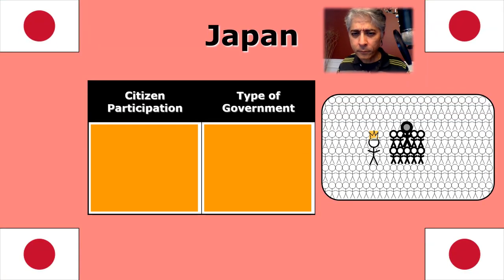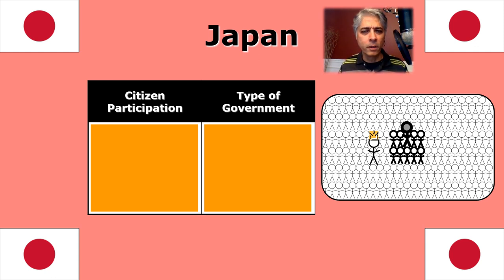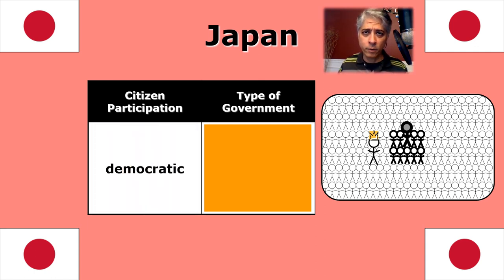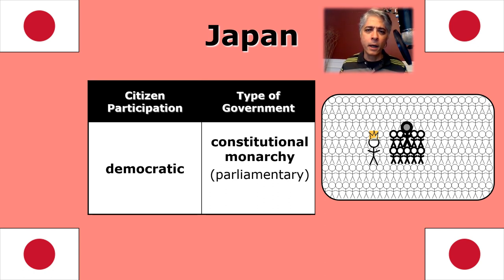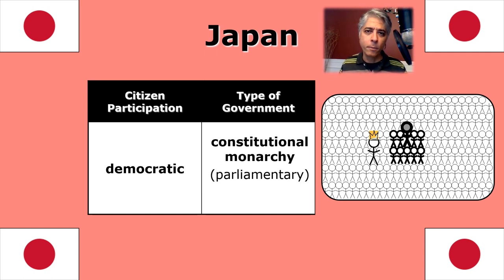On to Japan. Japan is a democratic country, and their system of government is a constitutional monarchy. There is a monarch in Japan, but he is purely ceremonial. In actual function, Japan operates as a parliamentary democracy, but with a ceremonial monarch.